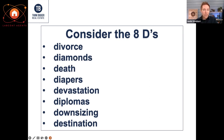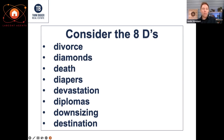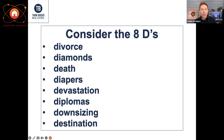Devastation — whether someone lost a job or there was a natural disaster, devastation causes people to have to move. Diplomas — when people are promoted or graduating college, they often make decisions about moving to a new area or zip code. Downsizing — whether going into a senior care facility or simplifying life for their golden years. Destination — people moving to sunnier locations or following their employment. Any of these changes in destination creates opportunities to buy and sell real estate.